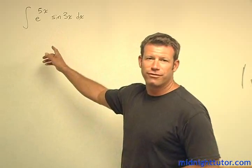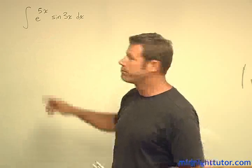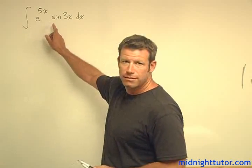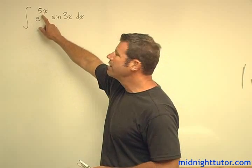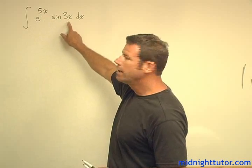and now this is the difficult version because we have some additional factors in here, but the problem is the integral of e to the x times a trig function like sine. So here we have integral of e to the 5x sine of 3x dx.